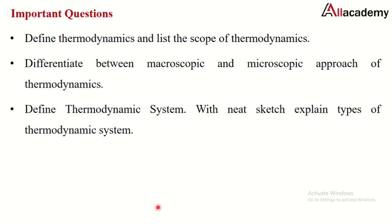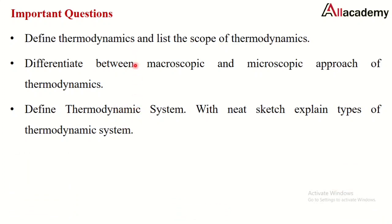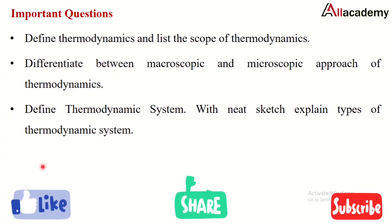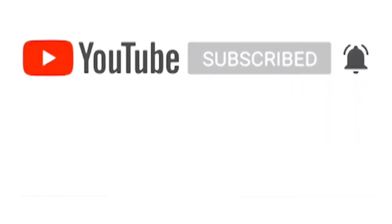Important questions from this session include: define thermodynamics and list its scope; differentiate between macroscopic and microscopic approaches; define thermodynamic system with a neat sketch and explain the types — open, closed, and isolated. These questions are repeatedly asked in university examinations, typically for four to six marks. If you have any doubts, please comment below, and click subscribe and the bell icon for updates.